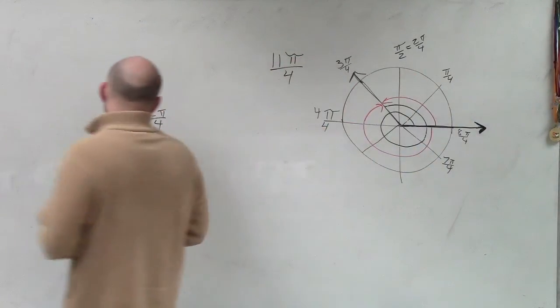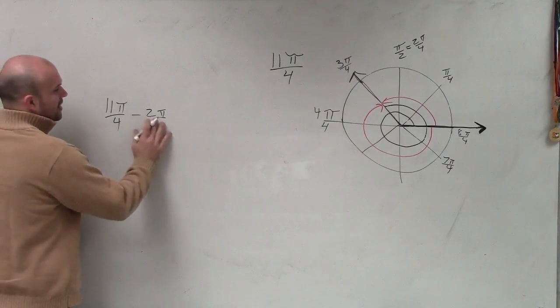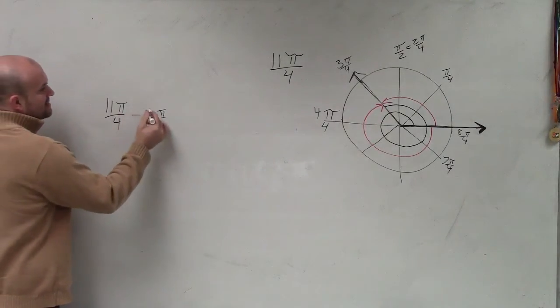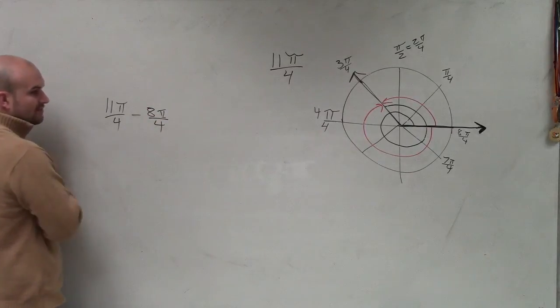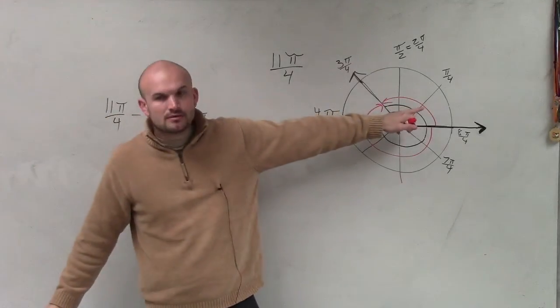So by subtracting 11 pi minus 2 pi, I can rewrite 2 pi as 8 pi over 4. Well, that gives me 3 pi over 4, which we're able to confirm with this angle.